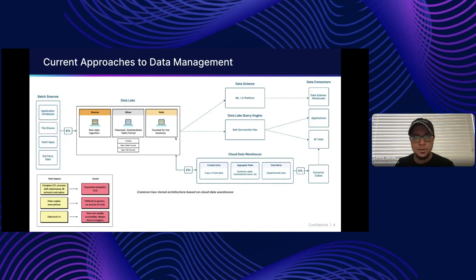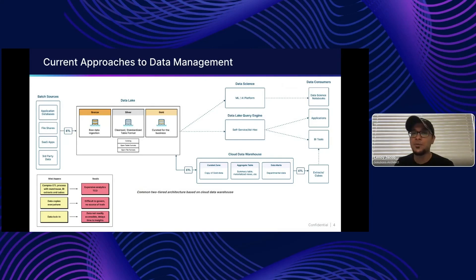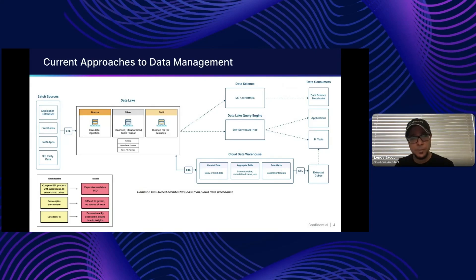Then you take bits of your gold data and ETL it into your cloud data warehouse, which is essentially another copy. You start building summary tables and accelerations to help your BI dashboards, creating processes around materialized views and keeping them in sync and fresh. Then you tend to generate departmental data marts — sometimes logical views, but often additional physical copies — so people within departments can work with data in their own way. Each of these data movements also means ETL code that has to be written, tested, deployed, and managed.